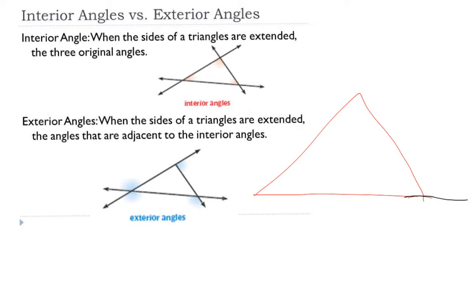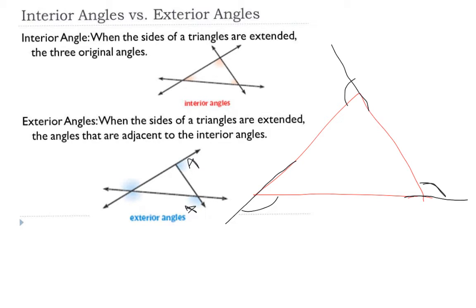Most of the time when talking about exterior angles, you're talking about a group of them — extending the shape in one direction. So for each vertex, you extend one side and that creates one exterior angle. When discussing the sum of all exterior angles, you're looking at one per vertex — not both supplementary angles at each corner. It's the angles adjacent to the interior angles.